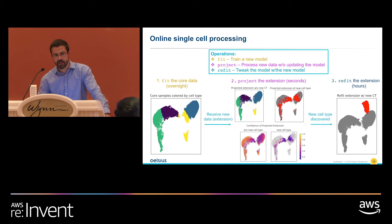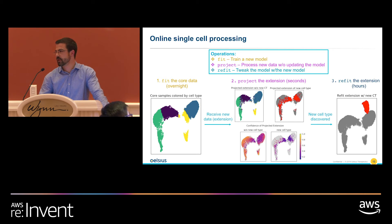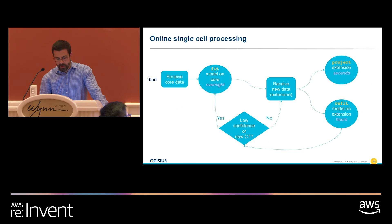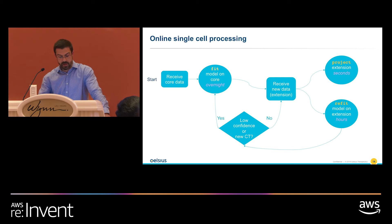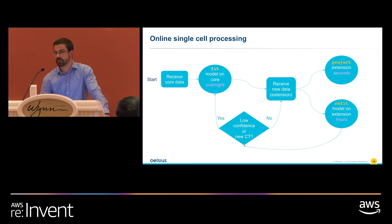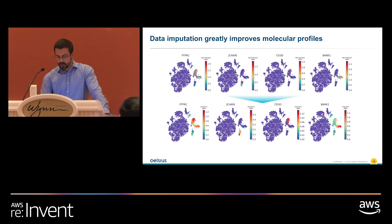As you can see on the right, the red cluster is a new cell type projected onto a t-SNE representation that is consistent with what we had before — we were able to retrain the model incorporating a new cell type while still projecting onto a t-SNE plot that preserved the prior shape. In summary: when we receive new data we fit the model, and when there's an extension to the data we check whether there's low confidence in the projection of new cells or a new cell type, and if so we refit the model.